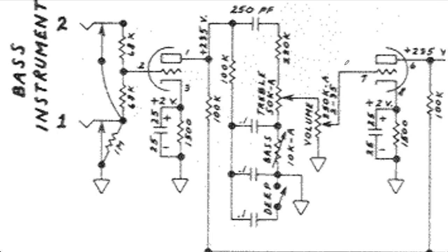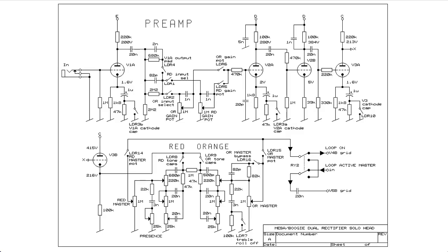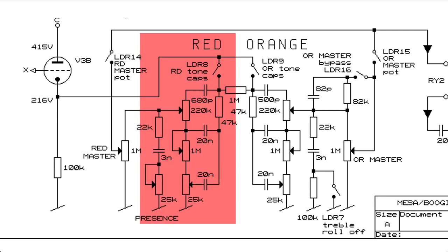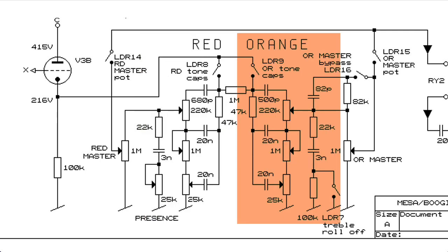On the Mesa Boogie dual rectifier, the tone stack comes after not one, not two, not three, but four common cathode preamp stages, including this crazy cold clipper stage. And it's buffered by a DC coupled cathode follower. And you have the choice of two different tone stacks that you can switch between, one for what's called the red channel and another for what's called the orange channel.